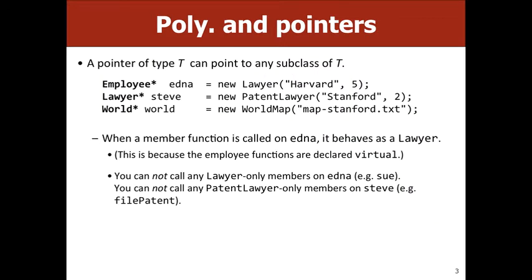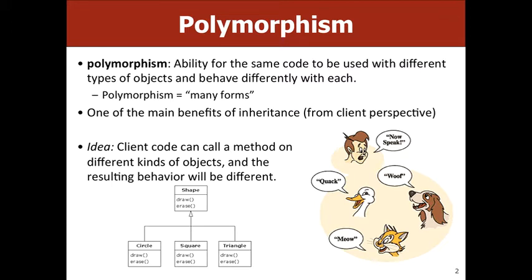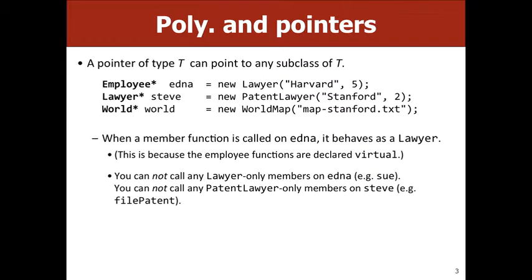This is why you can call draw on a G-oval and on a G-rect and they'll both draw something, even though what's actually drawn is different. In C++, this looks like you have a pointer to something where the pointer type is the superclass and the actual declaration is the subclass. From the Trailblazer assignment, all the different kinds of maps — terrain, maze — are just subclasses of world, so you can call DFS on any of them.